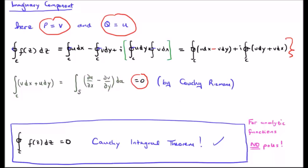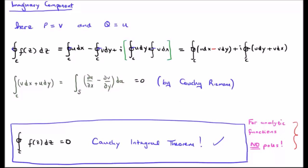This allows us to define the Cauchy Integral Theorem for analytic functions — functions which have no poles — whereby we take a closed contour integral in an anticlockwise fashion of f of z dz and it gives us zero. This is the Cauchy Integral Theorem.